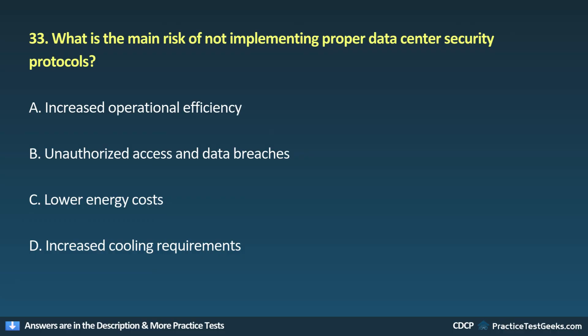Question 33. What is the main risk of not implementing proper data center security protocols? A. Increased operational efficiency. B. Unauthorized access and data breaches. C. Lower energy costs. D. Increased cooling requirements.